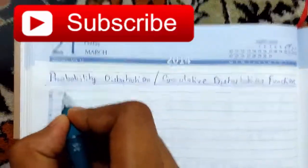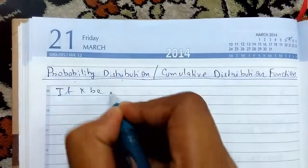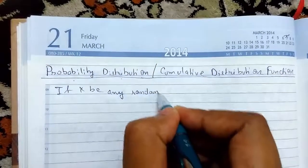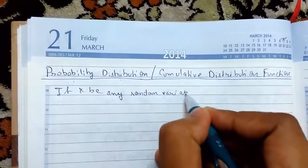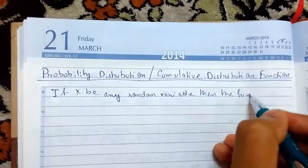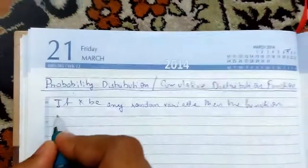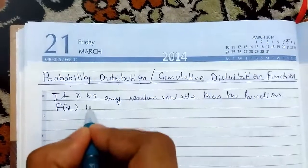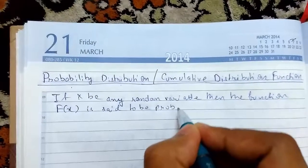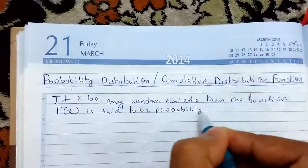So let me define it. If X be any random variable, capital F of X is said to be probability distribution function.